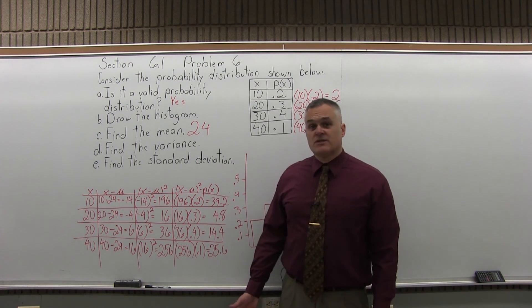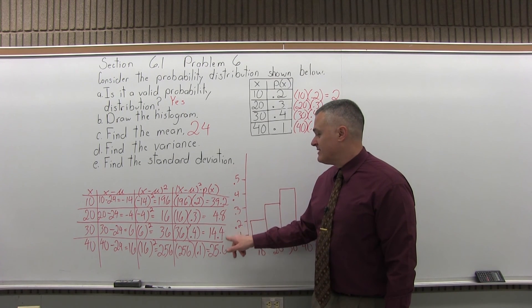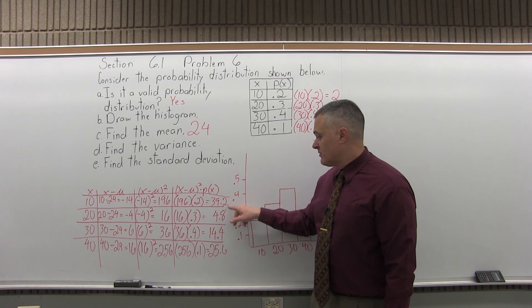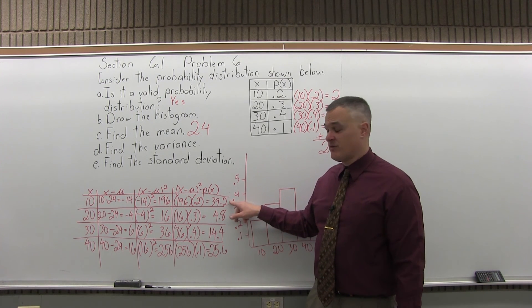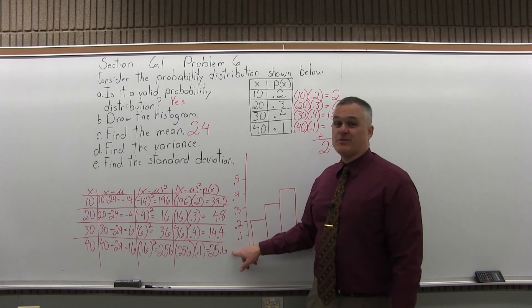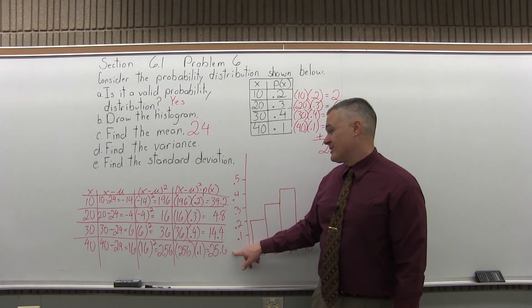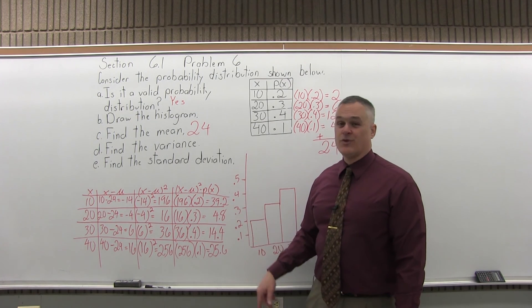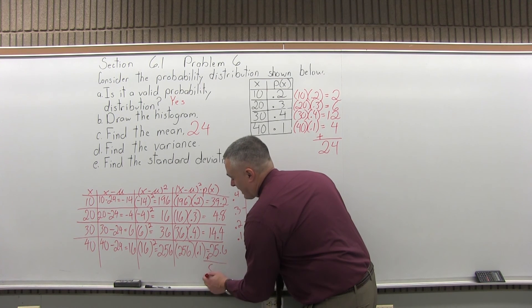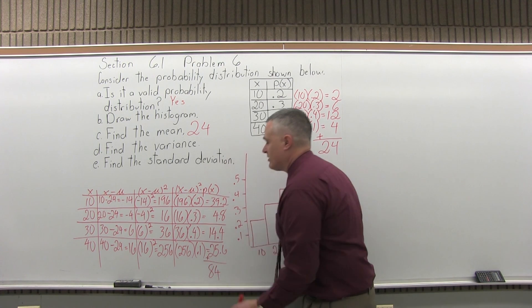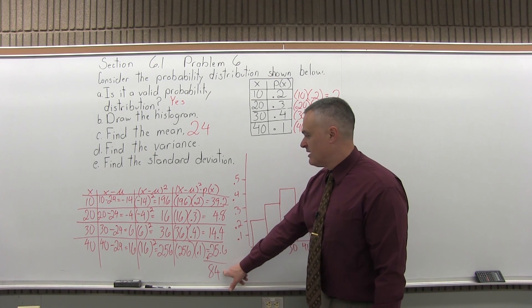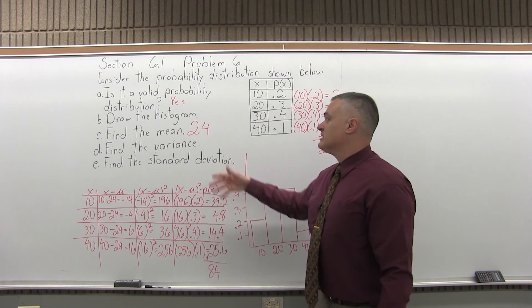So to finish the process of finding the variance, what I need to do is add these together. 39.2 and 4.8 match up pretty nicely, it makes 44. And 14.4 and 25.6 also matches up pretty nicely to 40 if you add them together. So I'm going to have 44 plus 40 is 84. I can actually add them without the calculator, which you totally don't have to do. I mean, you can just use the calculator and add these numbers and get 84. I can actually see it without the calculator. So that's the answer for the variance. The variance is 84.